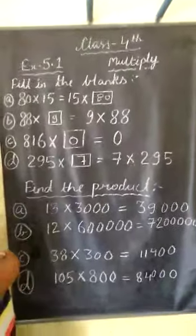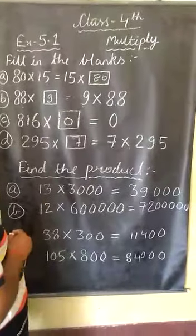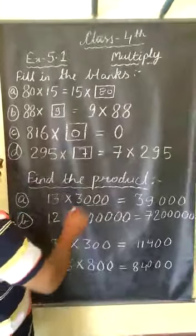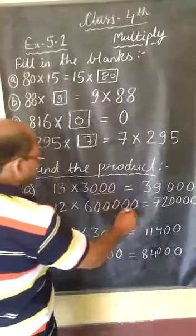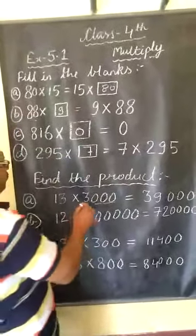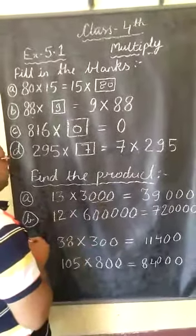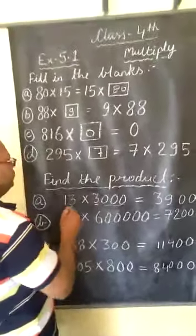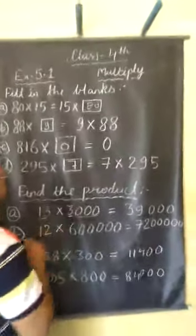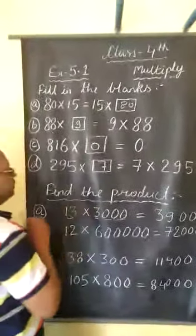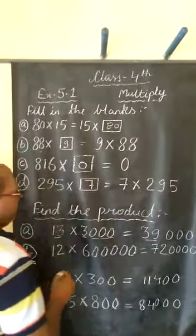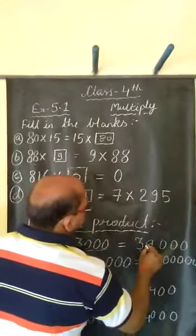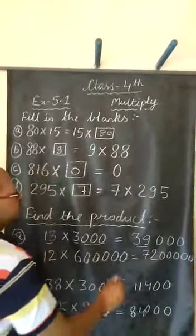Second question: find the product. Here we use multiplication involving zeros. For example, 13 multiplied by 3000. In this type of question, where a number has many zeros, we can perform the multiplication without full computation. First, we multiply the non-zero parts: 13 multiplied by 3 gives 39. Then we add the zeros from 3000, which is three zeros, so we place them after 39 and get 39,000.